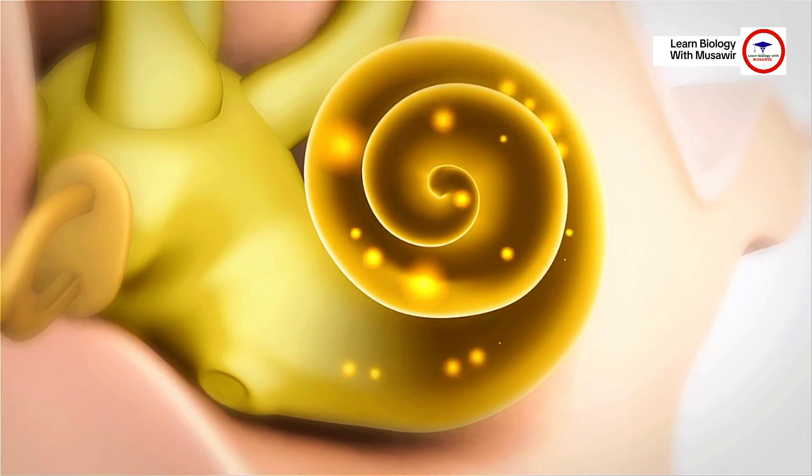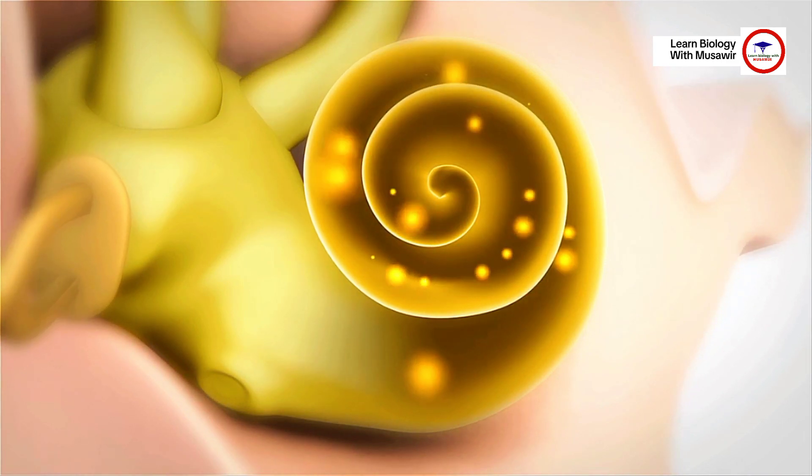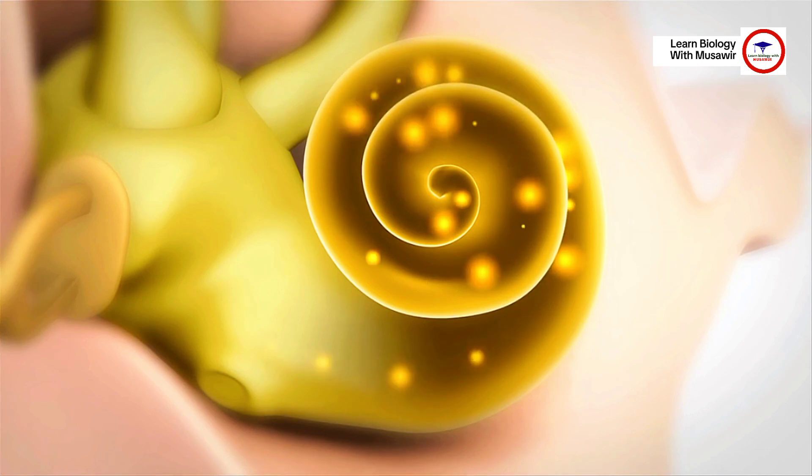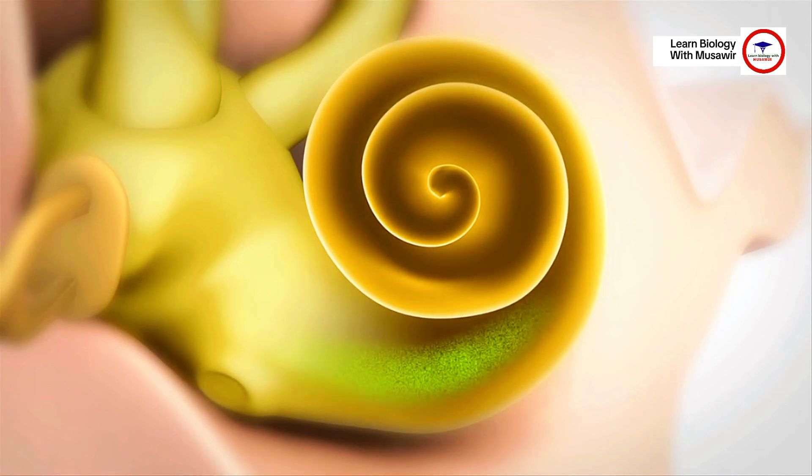In simplified terms, the cochlea is a spiral-shaped tube filled with fluid. Sensory cells, also called hair cells, line the entire length of the cochlea.